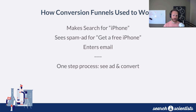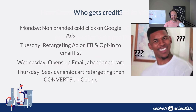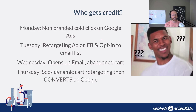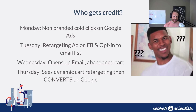Today people operate much, much differently. Let's take a look at a very normal example and who is going to get the credit. Let's say on Monday someone searches a non-branded cold click on Google Ads. Tuesday they see a retargeting ad on Facebook and then opt-in to your mailing list. Wednesday they open up that email and abandon their cart.